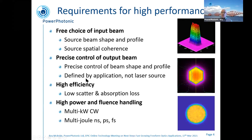In doing that, you want high efficiency — you can generate all sorts of beam profiles by masking beams, but in most of these applications customers want 90, 95, or 99% efficiency. They need optics with very low scatter and very low absorption loss, because typically we're dealing with high-power beams, often multi-kilowatt — these days often well above 10 kilowatts CW — and also multi-joule beams in the nanosecond, picosecond, and femtosecond regimes, where absorption loss and scatter must all be kept at very low levels.